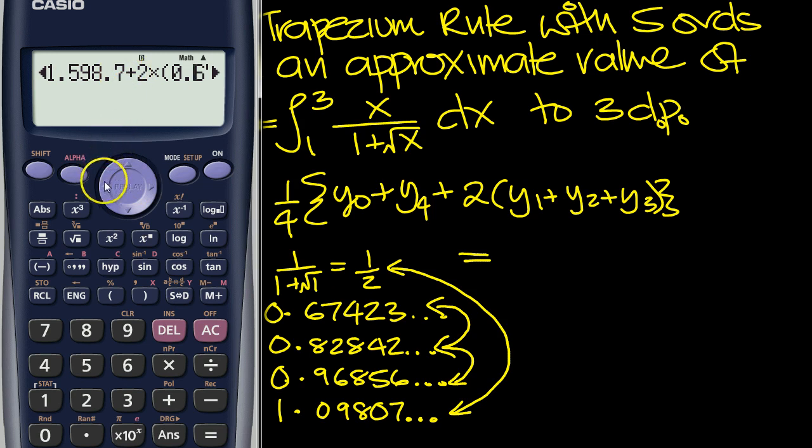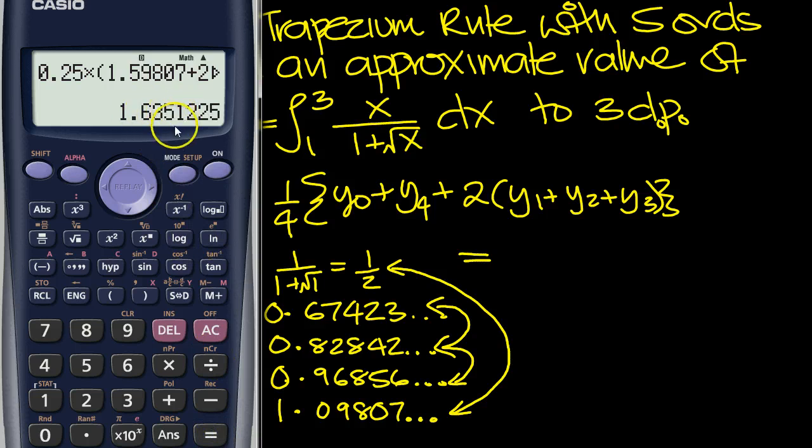Ah, I've got a decimal point here. 1.59807. So delete and put a 0. There we are. We should press equals now. And it's to 3 decimal places. It's 1.635.